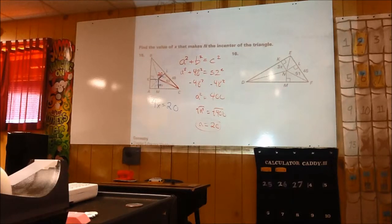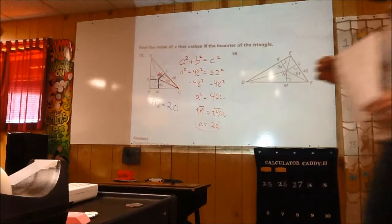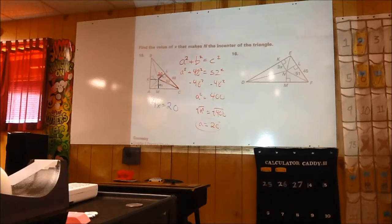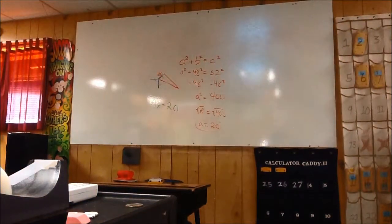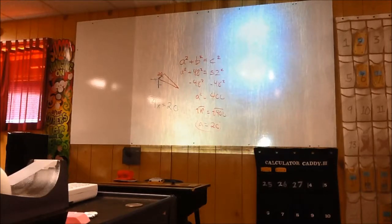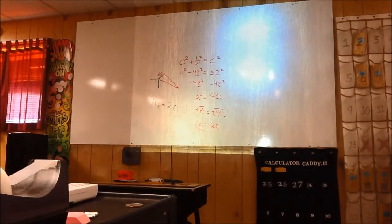Right now it should look something along these lines — it should have a good amount of information on there. First thing we're going to do is draw a fairly large triangle, because we're going to draw some segments inside and write some things on the inside of this triangle. It needs to be big enough for you to draw and write inside.